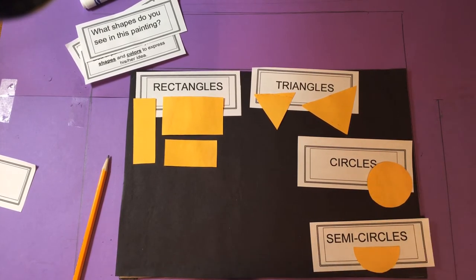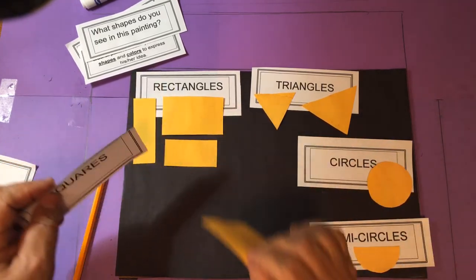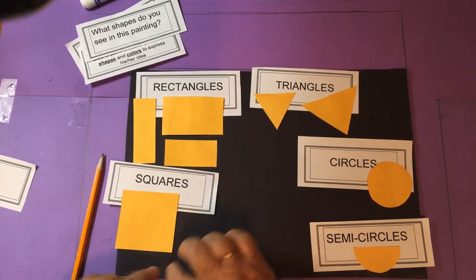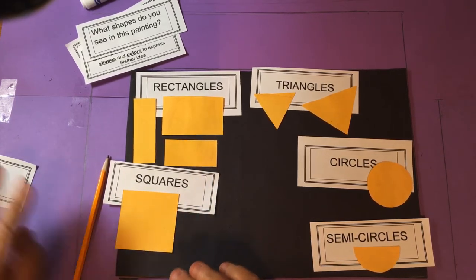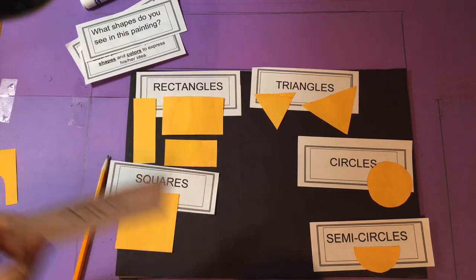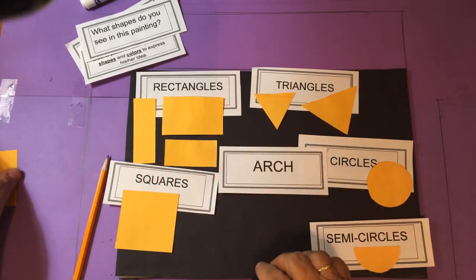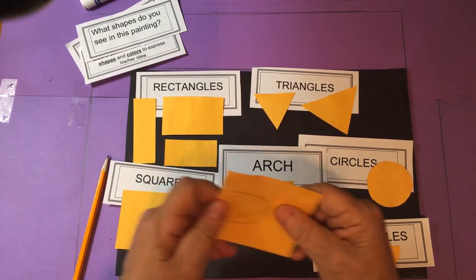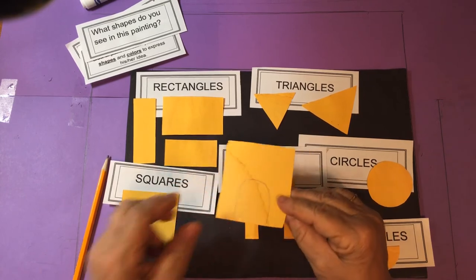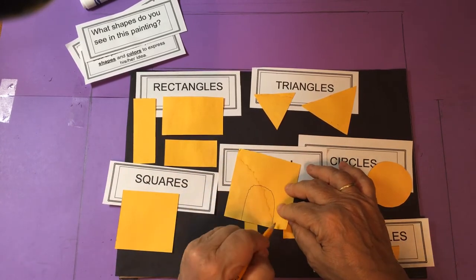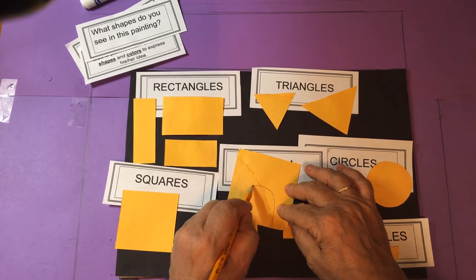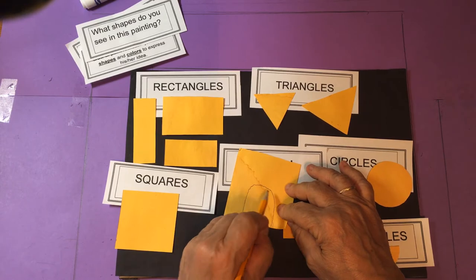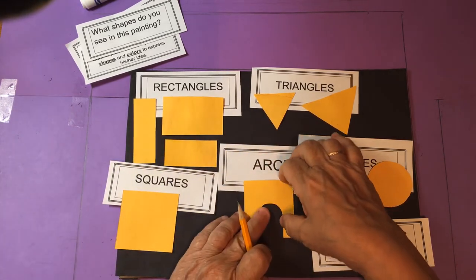And then there are squares which are kind of in line with the rectangles because a square is a rectangle except its sides are all equal. And then you need an arch. An arch is really very simple to make. What you do is you take a square or a rectangle and then you draw an upside down U, and then cut the U out and there you have your arch.